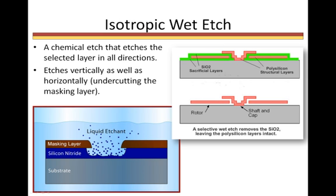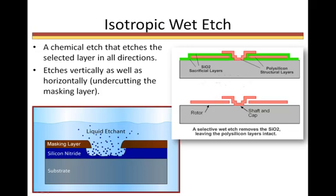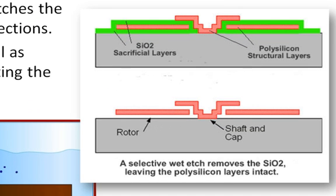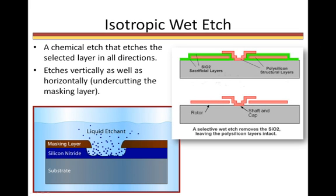In microsystems, the wet etch process is extremely handy in removing sacrificial layers, as we see here. Think about what would happen if the wafer were left in the liquid etchant, even after the substrate was reached. At this point, the etchant would continue to etch sideways underneath the masking layer, and eventually remove the entire silicon nitride layer, without etching the mask or substrate. This characteristic makes it very effective at removing a bulk of material, such as the sacrificial layer or a masking layer.